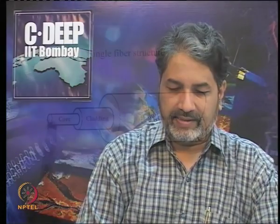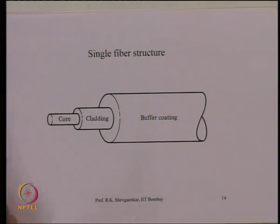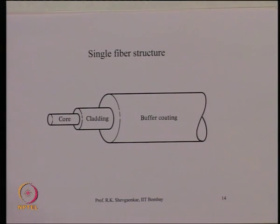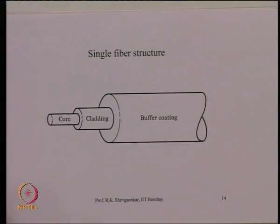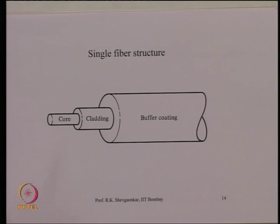As we discussed, the optical fiber is basically a solid glass rod consisting of an inner structure called the core and an outer shell called the cladding. For propagation of light, these two layers — the core and the cladding — are the important regions.